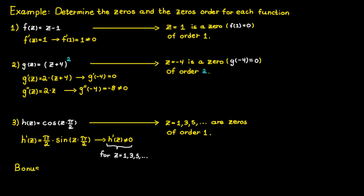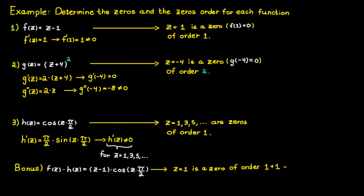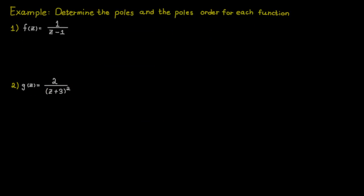Now we have the product of function f and function h. Since both functions have a zero of order 1 at the point 1, the product has a zero of order 2 at the same point. Then, of course, C equals 3, 5, 7, and so on are also zeros of order 1. Let's do the same kind of examples but this time with poles. What we're looking for are places where we are dividing by zero.